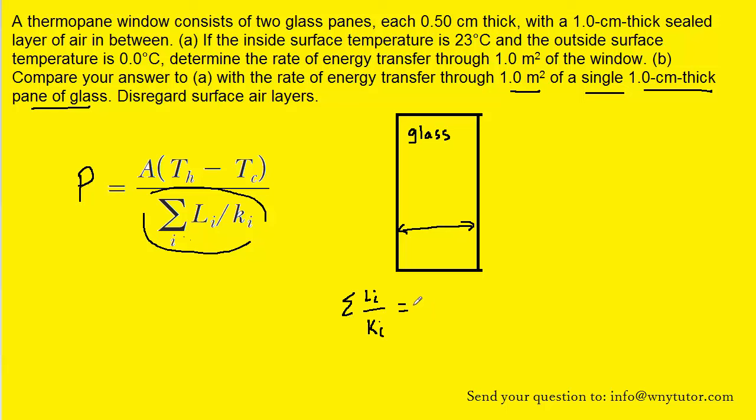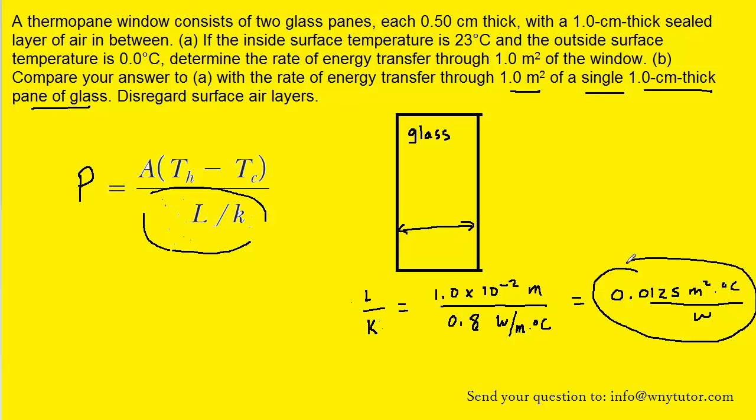The length of this glass layer, as stated, was one centimeter. Notice we're converting to meters, and the thermal conductivity, as we said before, for glass is 0.8. We should get 0.0125 meters squared degrees Celsius per watt. That's the value for the ratio L divided by K that we're going to be plugging into the denominator of the equation.